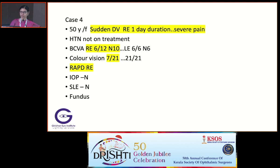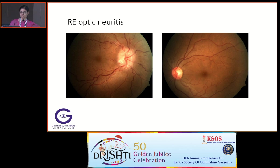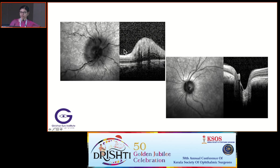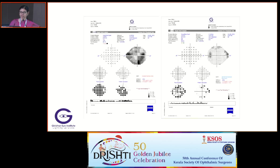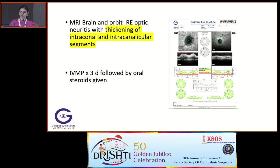A 50-year-old female presented with sudden diminution of vision in the right eye of one-day duration with severe pain. RAPD right eye, color vision defective. Fundus and OCT with visual fields were done. MRI was suggestive of optic neuritis. IV methylprednisolone was given and she improved.